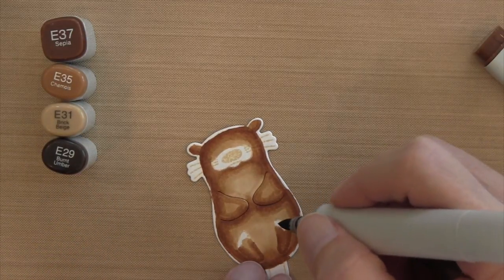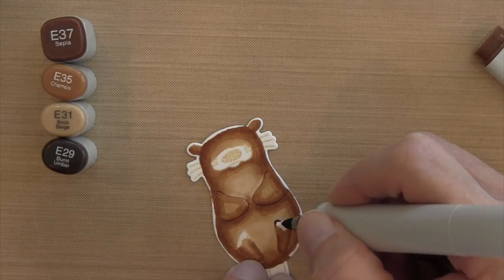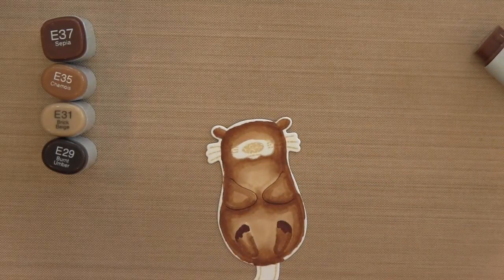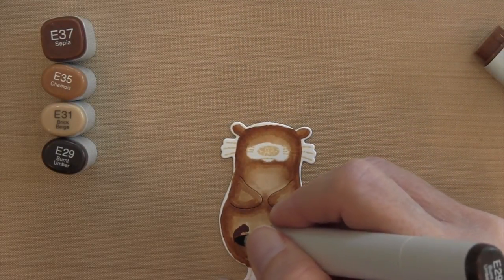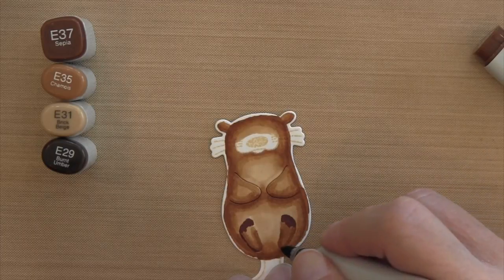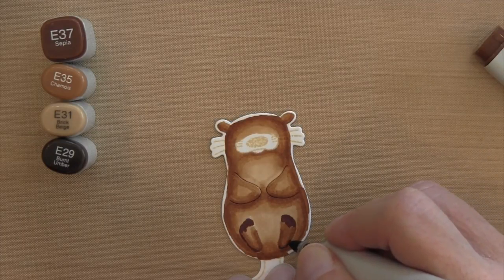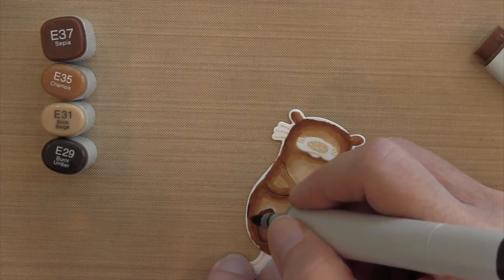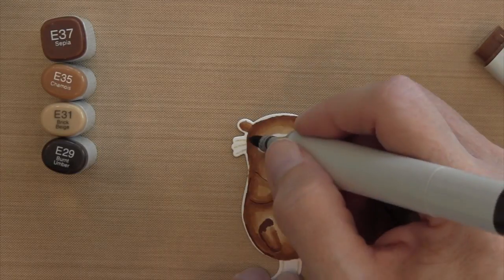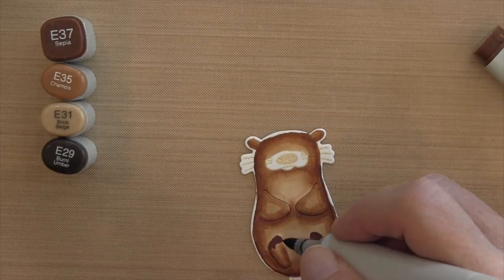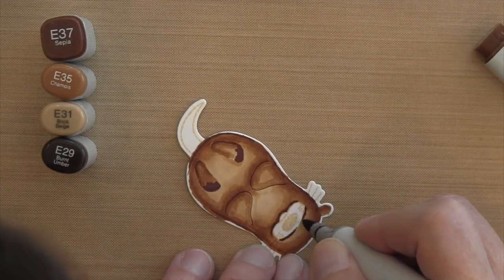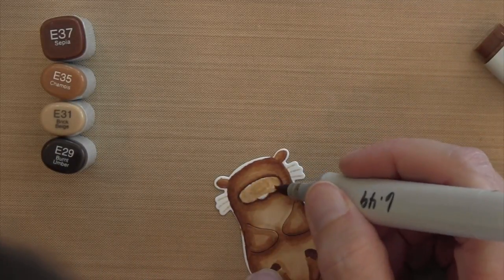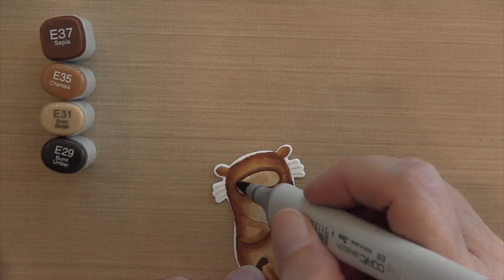I'm going back and forth between all three colors first, then I'll take this E29, which is a much darker brown color, and color the tops of his feet. Then I'm going to draw some outlines to define his feet and arms since they're sticking out. I want to make sure they're more defined compared to the body, so I'm going to outline them with the E29, but not all the way around—just in key areas.